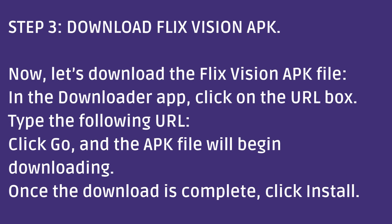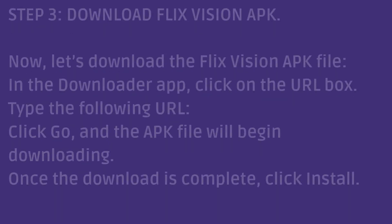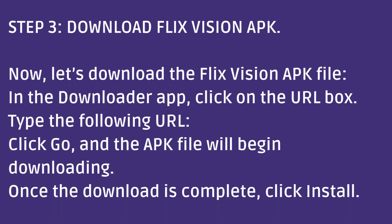Step 3: Download FlixVision APK. Now, let's download the FlixVision APK file. In the Downloader App, click on the URL box. Type the following URL: [insert latest FlixVision APK URL here]. Click Go and the APK file will begin downloading. Once the download is complete, click Install.